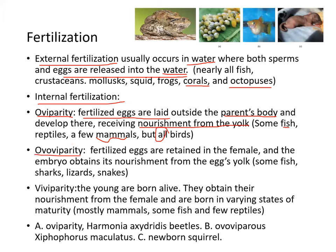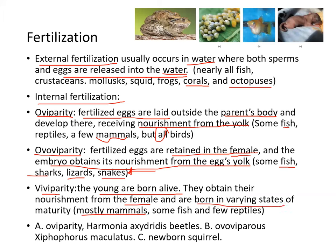Ovoviviparity is where fertilized eggs are retained in the female and the embryo obtains nourishment from the egg's yolk — this includes some fish, sharks, lizards, and snakes. The eggs are retained until they're ready to hatch. In viviparity, young are born alive, obtaining nourishment from the female, and are born in varying states of maturity — this is most mammals, some fish, and a few reptiles.